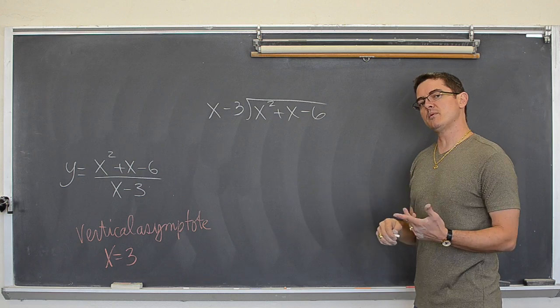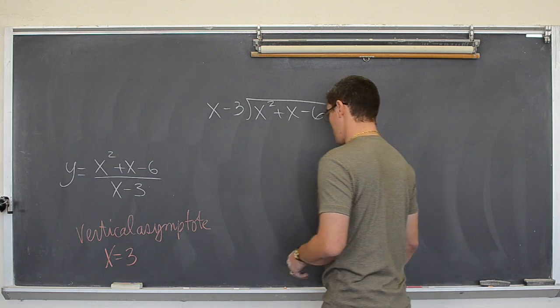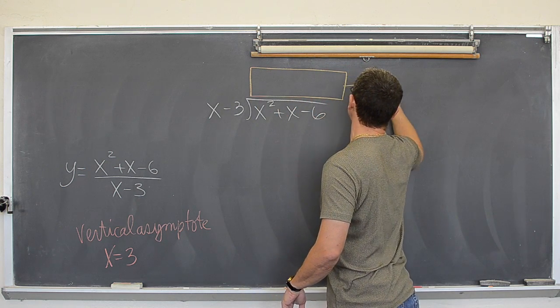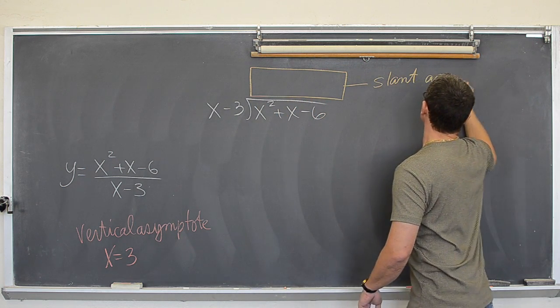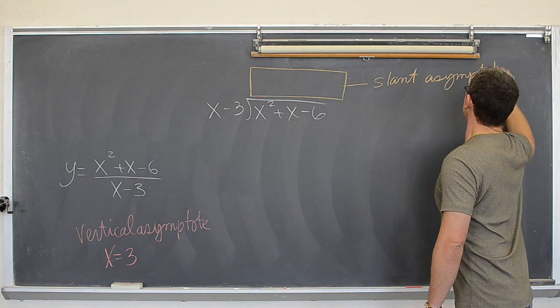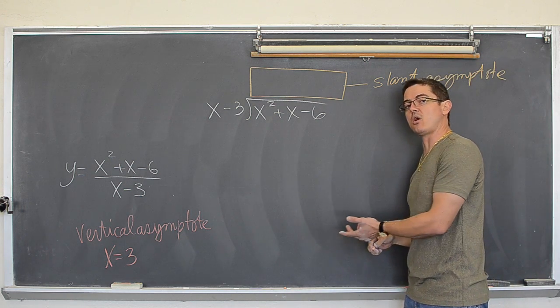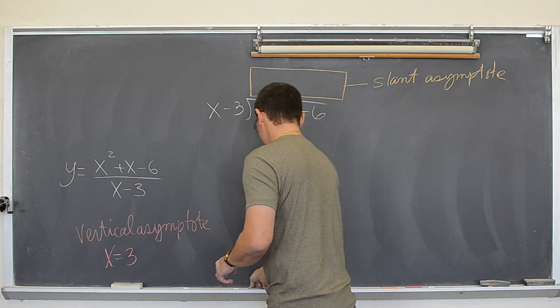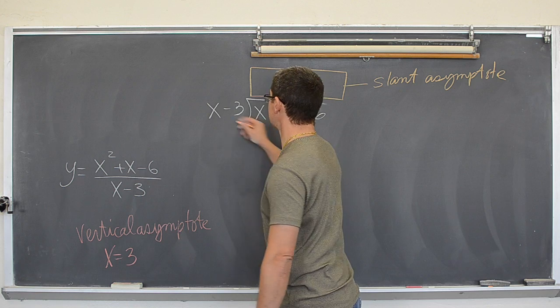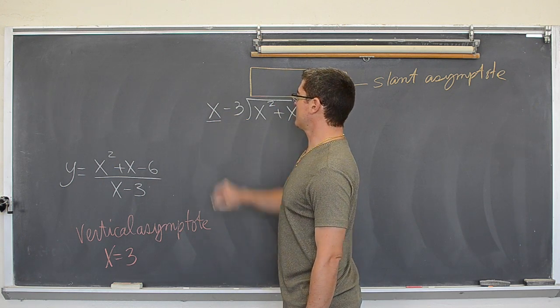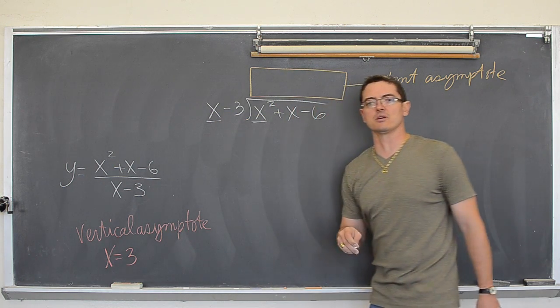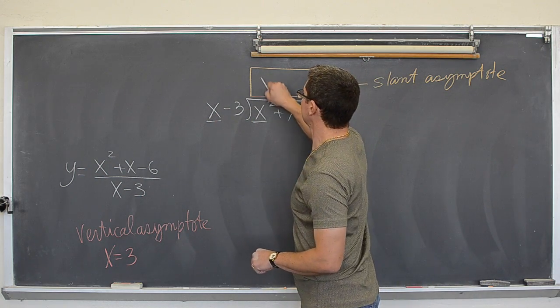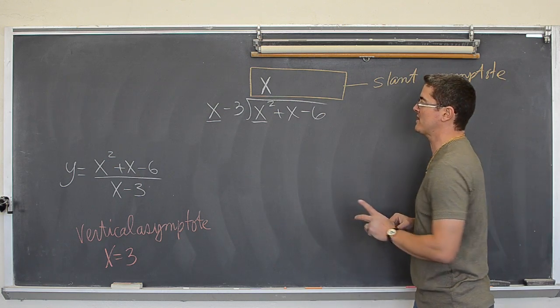And when we are done with this by the way, the slant asymptote is going to be whatever is up here. This equation is going to give us the slant asymptote. So that is why we are doing the long division. So how do you get x, this first term, to equal this first term? Well, I multiply it by x. So I am going to place an x up here. I like to stack mine a little bit differently than the textbooks do. I hope that is ok with you.